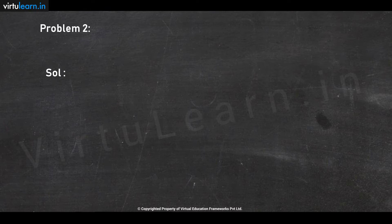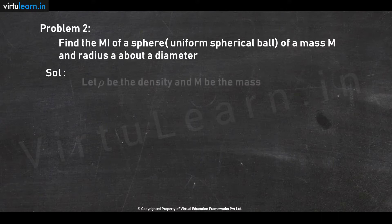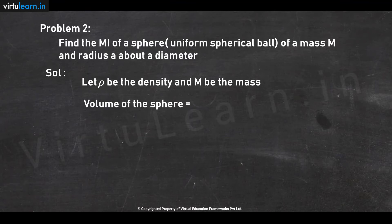Let's discuss a problem on finding moment of inertia of a solid. The problem is: find the moment of inertia of a sphere, or uniform spherical ball, of mass m and radius a about a diameter. Let rho be the density and m be the mass. The volume of the sphere is four-thirds pi a cubed, so mass becomes four-thirds pi a cubed times rho.